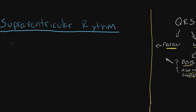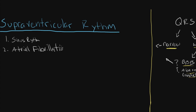The most common causes of SVT are: number one, sinus rhythm — because sometimes you miss the fact that you're having a sinus rhythm; two, atrial fibrillation; three, paroxysmal SVT; and four, a junctional or AV nodal rhythm.